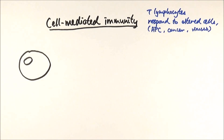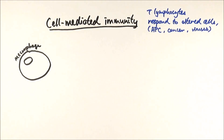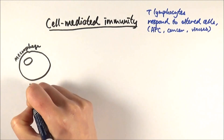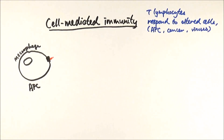Taking a step back to when the body first encounters the pathogen: a normal macrophage encounters the pathogen, recognizes it as foreign, engulfs it, processes it, and becomes an antigen-presenting cell. The way it does this is by having the MHC bind with the antigen and present it onto the surface — this is the antigen-MHC complex.